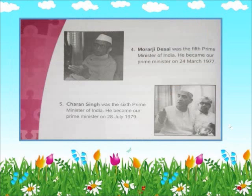Our fifth Prime Minister was Morarji Desai. He became our Prime Minister on 24th March 1977. Our sixth Prime Minister was Charan Singh. He became our Prime Minister on 28th July 1979.